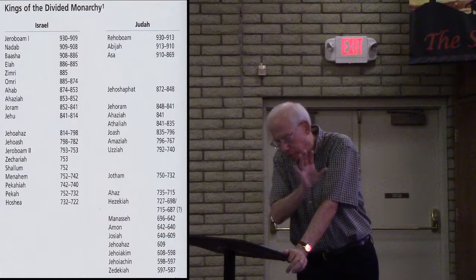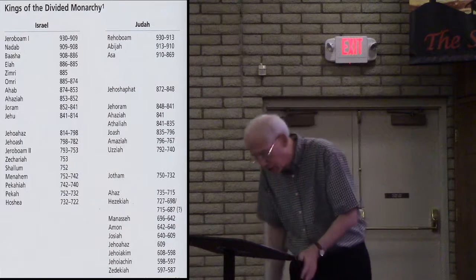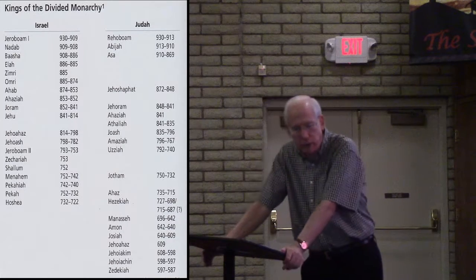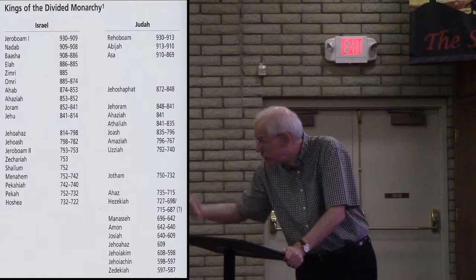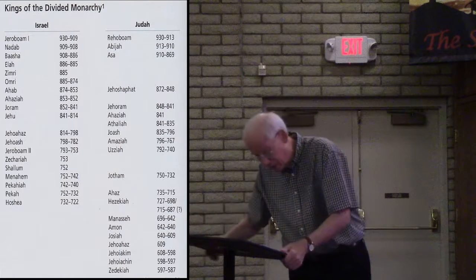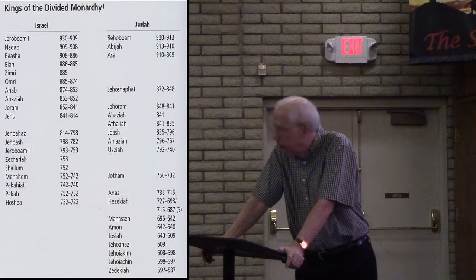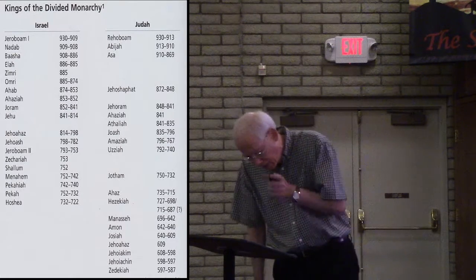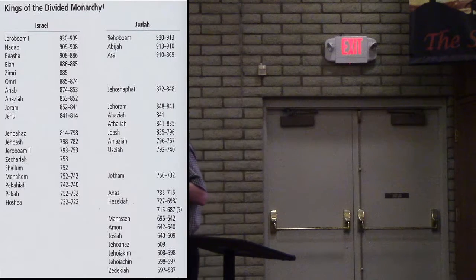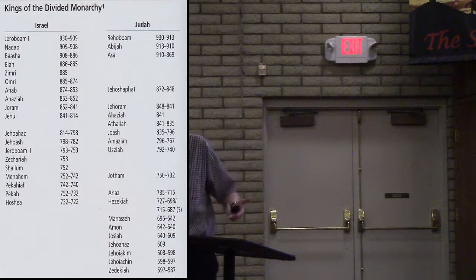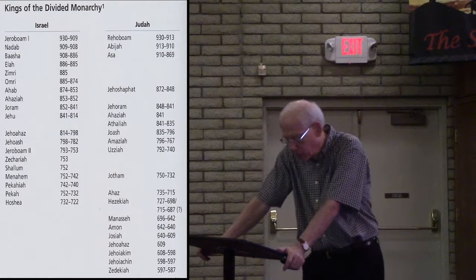Back to Israel — Zechariah, son of Jeroboam the Second, was the fifth and final king of the Jehu dynasty. Remember, four generations were promised. He continued to worship the golden calves and was assassinated at Ibleam by his successor Shallum after only six months on the throne.